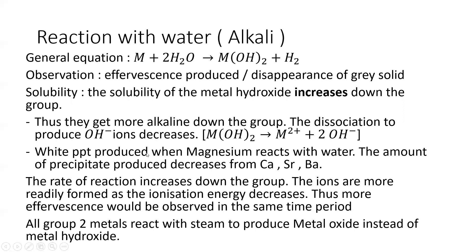White precipitate is produced when magnesium reacts with water, and the amount of precipitate produced decreases from calcium, strontium, and barium. The rate of reaction also increases down the group because ions are more readily formed — ionization energy decreases. Thus, more effervescence is observed in the same amount of time, more hydroxides are produced, and more hydrogen gas is seen.